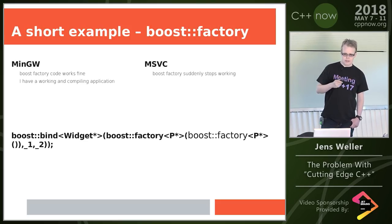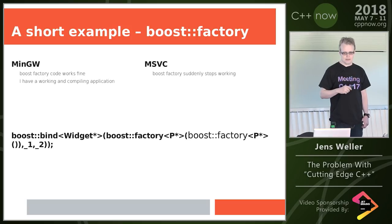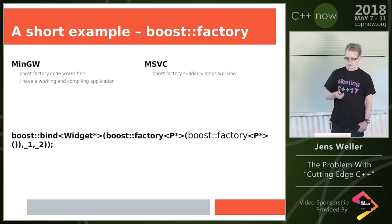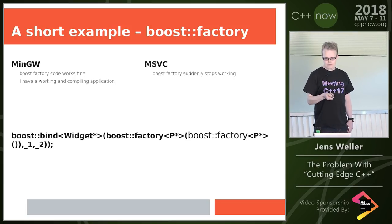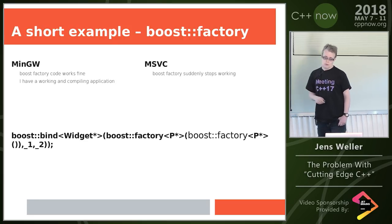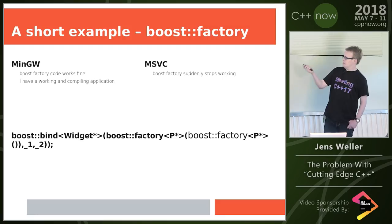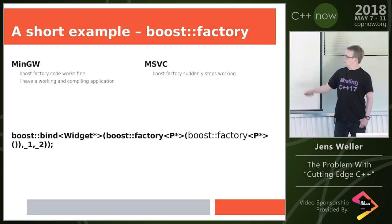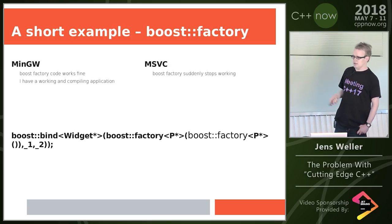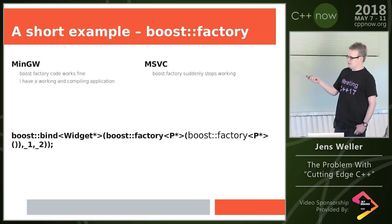I'd like to start this talk with a short example which got my attention to this whole issue last year. I was porting from MingW to Microsoft Visual Studio — actually the compiler, not the IDE. I had this code which uses boost::factory. It's a bit long and quirky, but it's basically creating a callable which ends with a type ID in a map — a factory function.